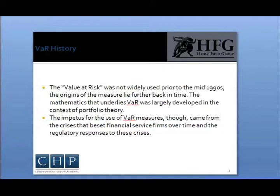At about the same time, trading portfolios for investment banks and commercial banks became very large and volatile. In 1995, J.P. Morgan provided public access to data on variances and covariances across various security asset classes that had been used internally for almost a decade to manage risk, and allowed software makers to develop software to measure these risks.